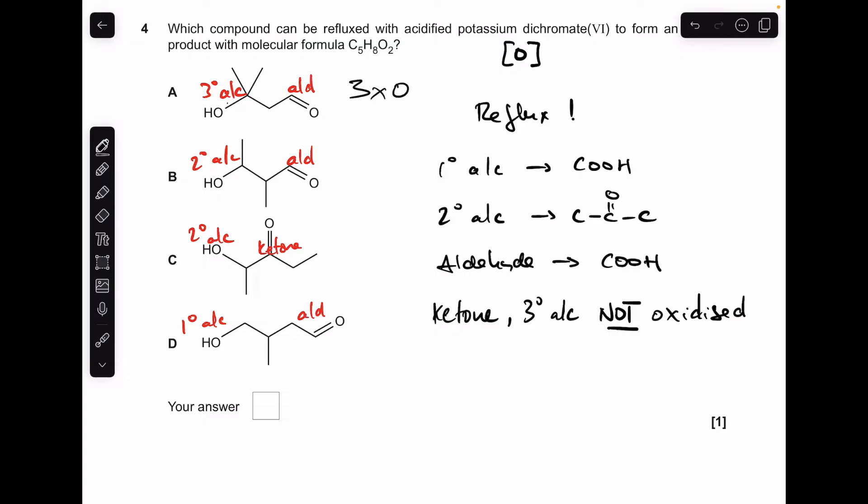Moving on to B, secondary alcohol oxidized to a ketone—still just got one oxygen there. Aldehyde to carboxylic acid, so we're going to have another three oxygens. So that's not the answer. Secondary alcohol is going to go to a ketone, one oxygen. Ketone isn't oxidized. Two oxygens, so that looks like it's going to be the answer. Primary alcohol oxidized to a carboxylic acid, as is the aldehyde, so that will have four oxygens in its product. So C was the answer.